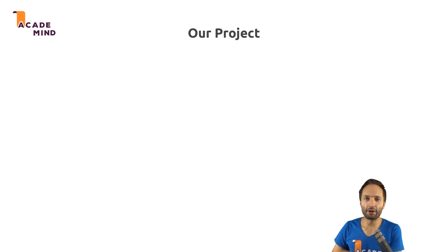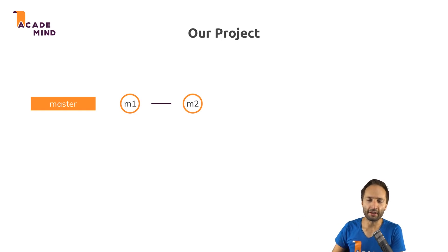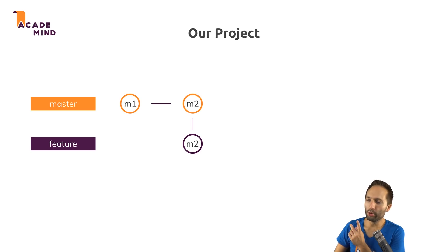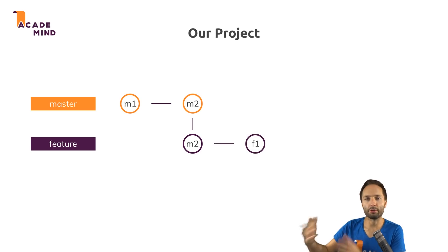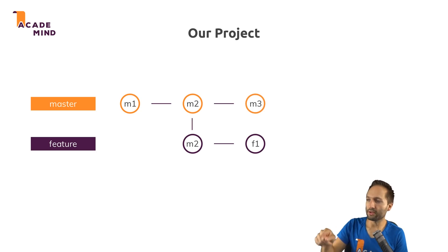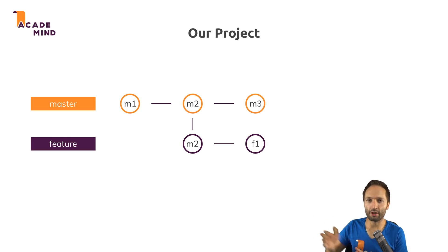In this video, we'll start with the following situation. We'll have a master branch with two commits, m1 and m2. This example project will also come with a feature branch, which is created based on the master branch — based on the last commit in the master branch. We implemented some stuff in there, working on a new feature which shouldn't be merged into master immediately. At the same time, the master branch is also evolving — our colleagues are working on it — so we also got a new commit. Both branches evolved from that second commit.